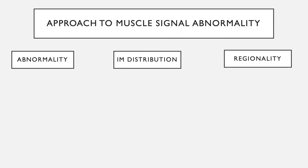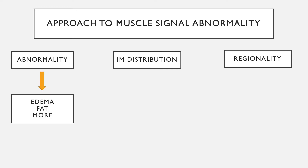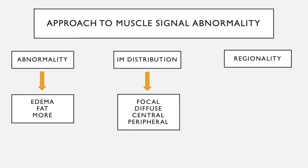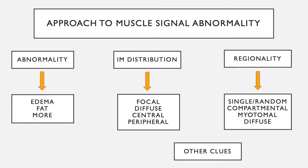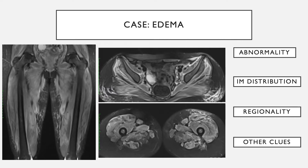To summarize, when looking at muscle abnormalities, we look for the abnormality — is it edema, fat, or something else? We look at the intramuscular distribution: is it focal, diffuse, central, or peripheral? We look at the regionality: is it a single muscle, a random muscle, a compartment, a myotome, or rather diffuse involvement? And then we look for other clues. Let's look at a few cases to get our heads wrapped around looking at muscle edema.